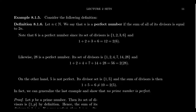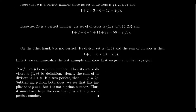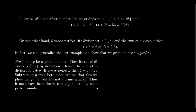Let me convince you that not every number is a perfect number. Take, for example, five. Five is not a perfect number — five is a prime number, and so its only divisors are one and five. If you add those together, one plus five equals six. Six is not the same as ten (which would be two times five). So five is not a perfect number.